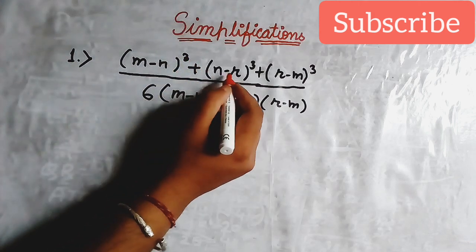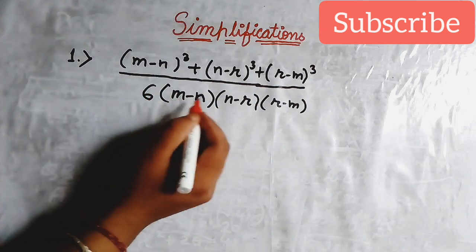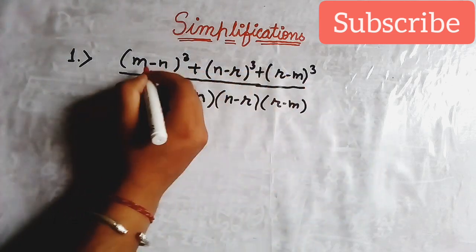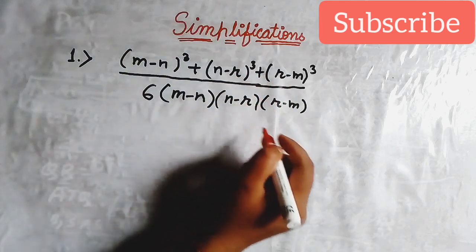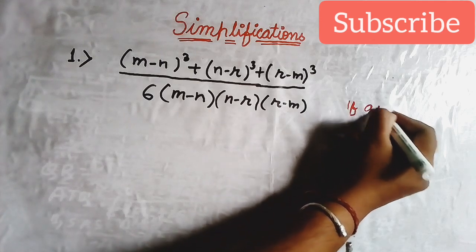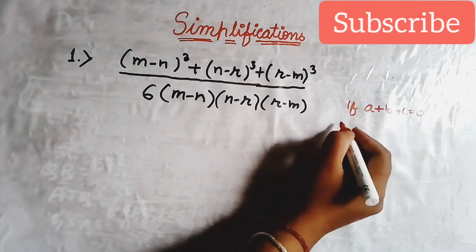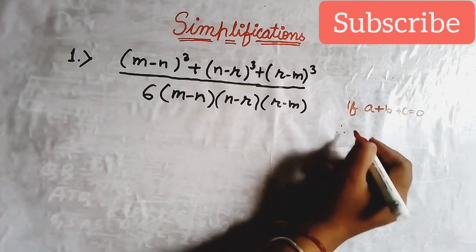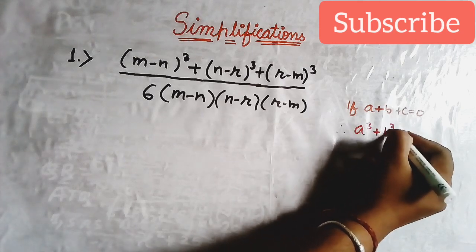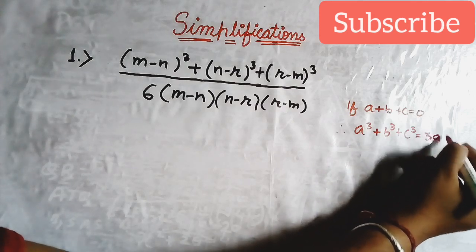My first question is: (m minus n) whole cube plus (n minus r) whole cube plus (r minus m) whole cube, all divided by 6 multiplied by (m minus n) multiplied by (n minus r) multiplied by (r minus m). For the numerator part, if you are not using the appropriate formula it will be very tough to solve. We have an identity: if a plus b plus c equals 0, then a cube plus b cube plus c cube equals 3abc.